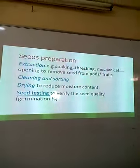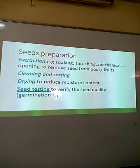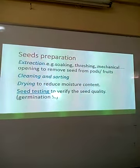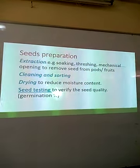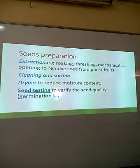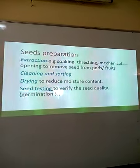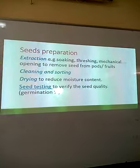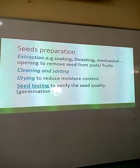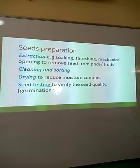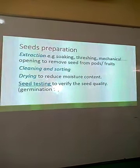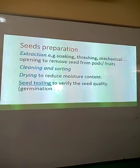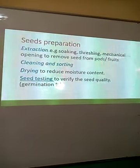To prepare seeds: one, extraction — remove the seed from the fruit or pod by soaking, threshing, or mechanical opening, so that we remove the seed from whatever was covering it. Two, cleaning and sorting to remove foreign materials and select good-sized seeds. Three, drying to reduce the moisture content, which also helps to break dormancy.